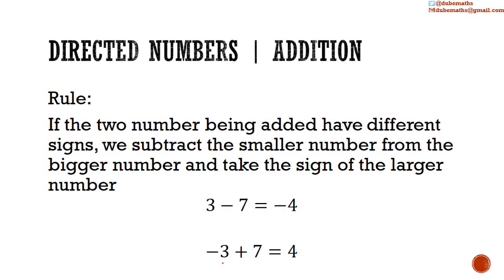Second example: we have negative 3 being added to positive 7. We have negative and positive — the signs are different, so we subtract: 7 subtract 3 equals 4. We keep the sign of the larger number. In this case, the larger number is positive, so the answer is positive 4.